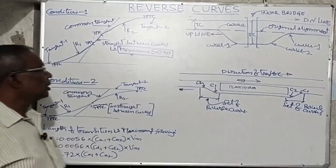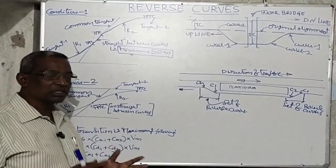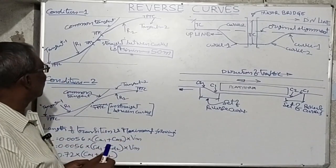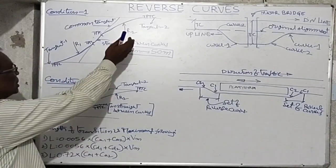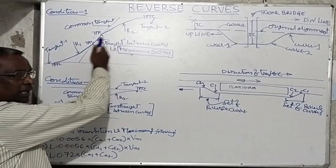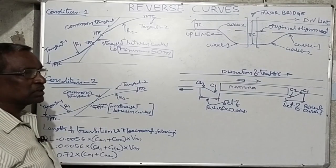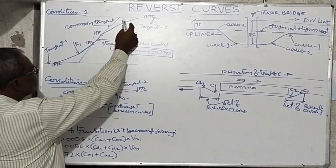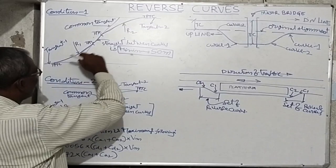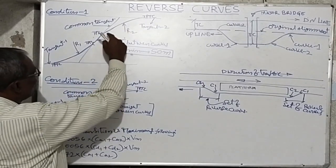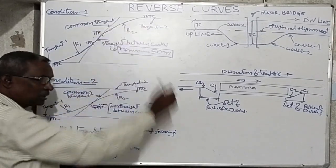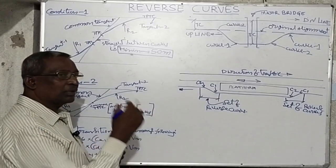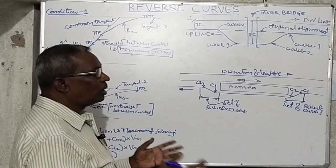Reverse curves — what is a reverse curve? A reverse curve is a combination of two simple curves in opposite direction with different radii. This is one curve, and this is the other curve — a combination of two simple curves with opposite direction, in contrary flexure. What is the necessity of reverse curves and how are they formed?